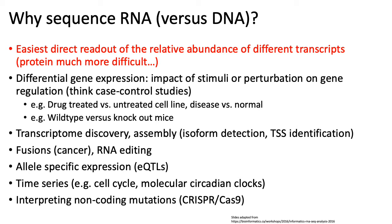There are many other applications beyond differential gene expression. For example, you can use RNA sequencing to identify novel transcripts, or even identify regions of the genome that are transcribed that weren't previously known to be transcribed. In certain types of cancers, it's common to see fusions between different genes, and through sequencing RNA you can identify these novel gene fusions. You can also use RNA sequencing to identify different transcription start sites.